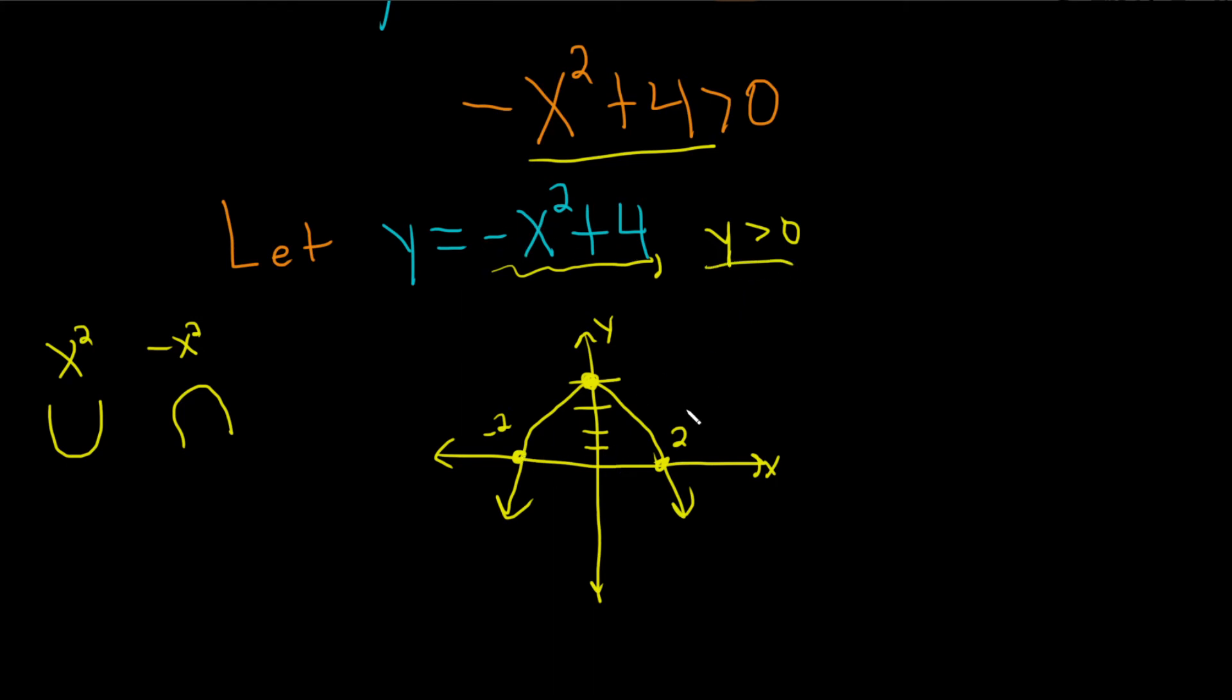So when is y greater than 0? Well, when is it above the x-axis, right here where my little cursor is? But we want the x values for which that's true. All of these numbers here that I'm shading in, those are the x values where y is positive. And you don't want to include the negative 2 and the 2 because it says greater than, right? That's when it's equal to 0. So that's the answer. That's the domain of the function, negative 2 to 2.